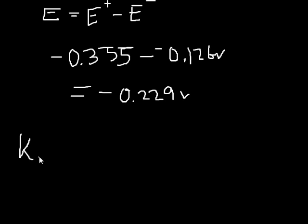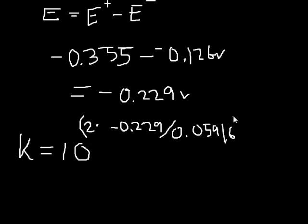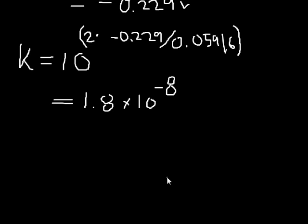And we can calculate K from this. K equals 10 to the power of 2 times negative 0.229 divided by 0.05196, that's the constant we use at 25 celsius. You're going to find this equals 1.8 times 10 to the negative 8. Now that's a really small number, it's less than one, so that means the reaction is not going to be favorable. So this is actually the Ksp for this reaction. It's as simple as that.